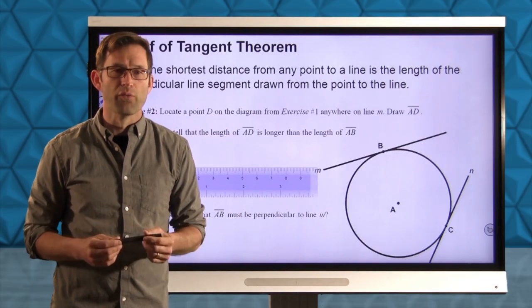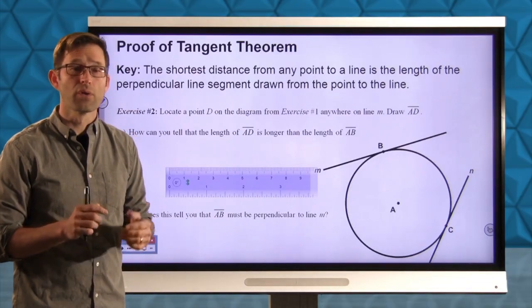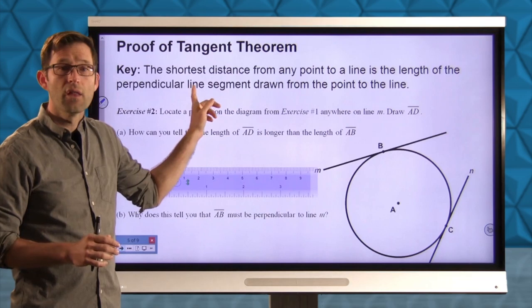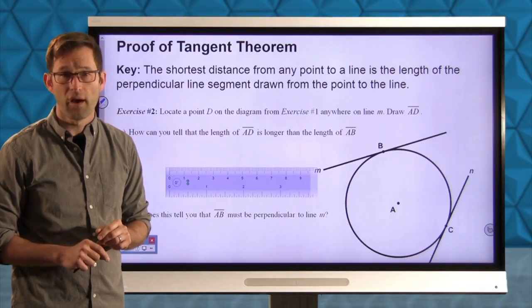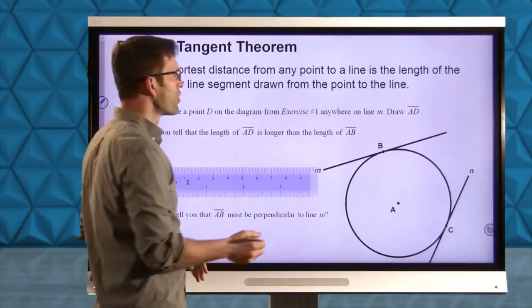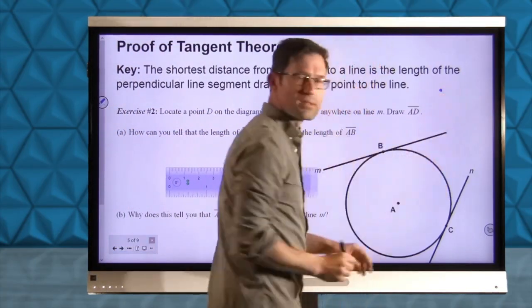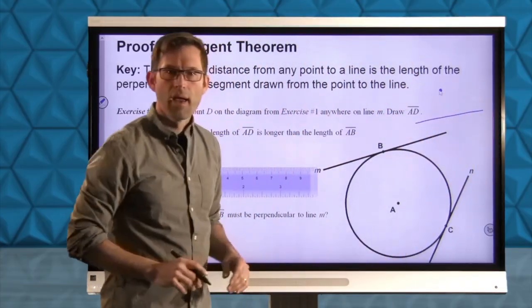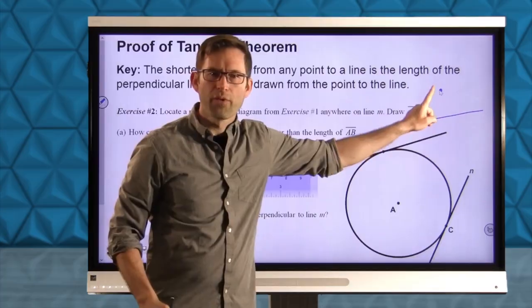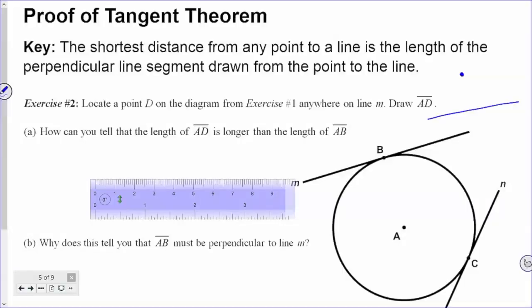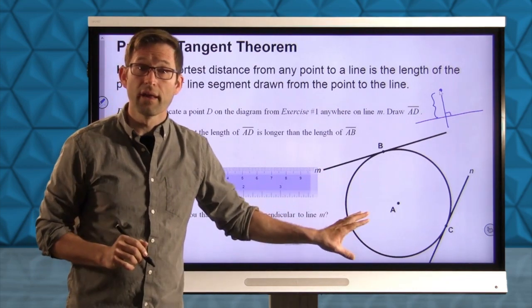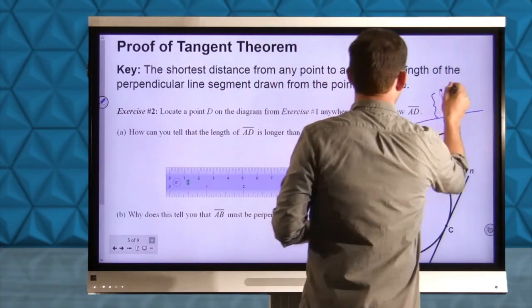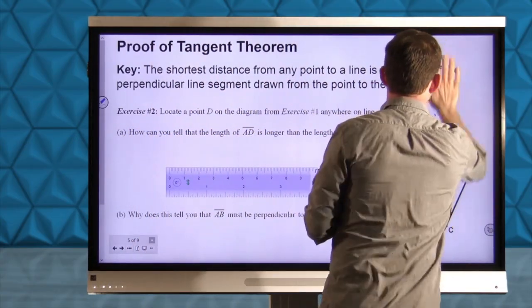And this is important because it will allow us to solve all sorts of different problems that involve radii and tangents to a circle that also involve 90 degree angles. But first let's go ahead and prove this. Now, the key to proving that the tangent line to a circle is always perpendicular to the radius is this. The shortest distance from any point to a line is the length of the perpendicular line segment drawn from the point to the line. And again, forgetting about this just for a minute, remember what that means. If I've got some point, and I've got some line, and I want you to go in the shortest path from this point to this line, the shortest path will always be the length of this line segment. And that's going to be the key to proving that the tangent line is perpendicular to the radius. So let's take a look at that.